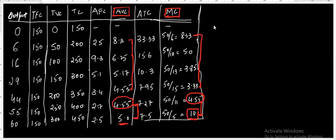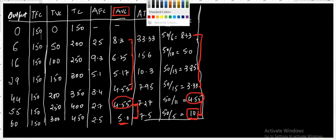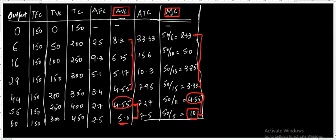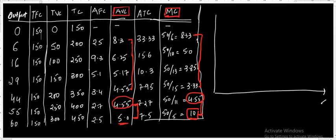Now let me plot all three relationships on a graph. I will draw a graph where I take output on the x-axis and cost on the y-axis, and I will be talking about average fixed cost, average variable cost, average total cost, and marginal cost.